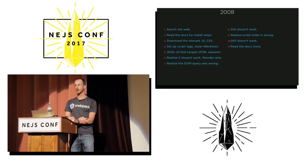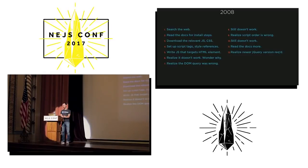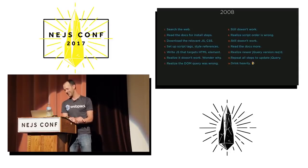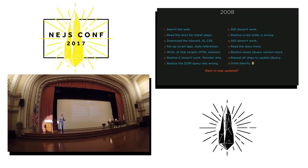I'd fix the script order and it still wouldn't work. I'd read the docs more and realize I was running the wrong version of jQuery — buried down in the fine print. I'd need to run at least a certain version, update that, and repeat all those steps just to update jQuery. There was no easy way to upgrade my dependencies. Once this finally worked, I would typically drink heavily. That was my 14-step process for working with JavaScript in 2008.